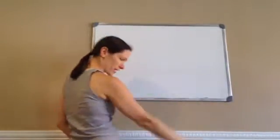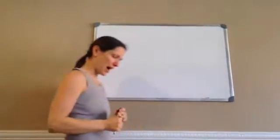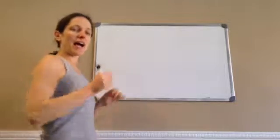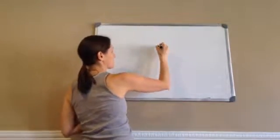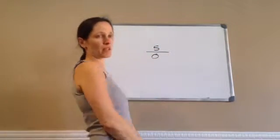All right, 7th grade, lesson 119, Division by Zero. I want you on your calculator to write this: 5 divided by zero, and tell me what you get.